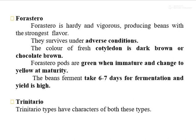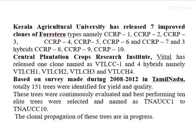The third variety is Trinitario. Trinitario types have characters of both Forastero and Criollo varieties. Kerala Agriculture University has released 7 improved clones of Forastero types namely CCRP-1, CCRP-2, CCRP-3, CCRP-4, CCRP-5, CCRP-6, and CCRP-7, and hybrids CCRP-8, CCRP-9, and CCRP-10.